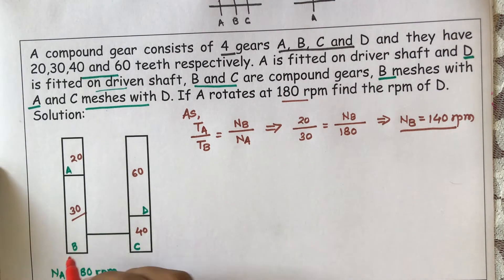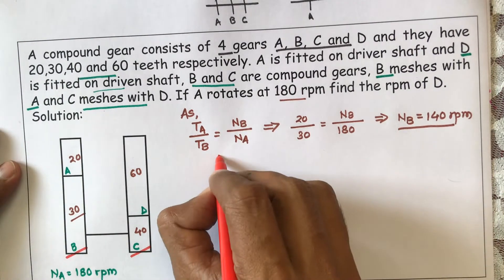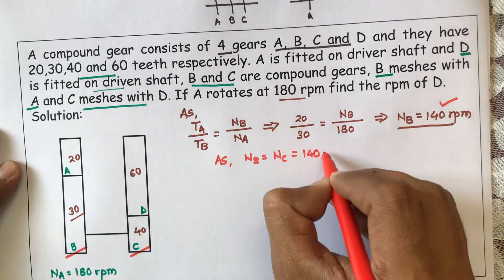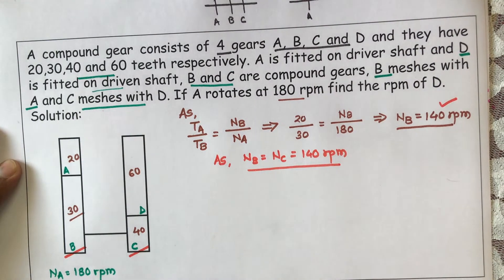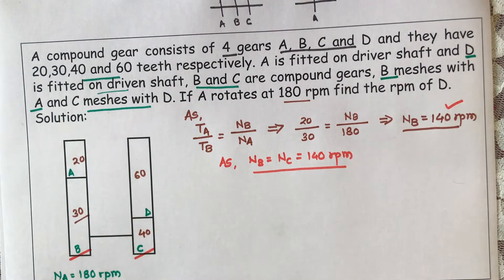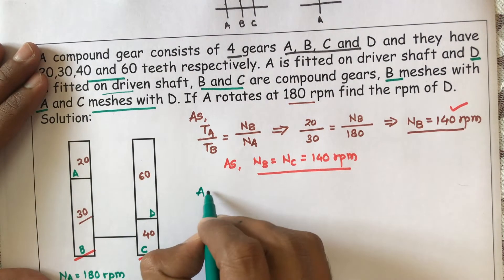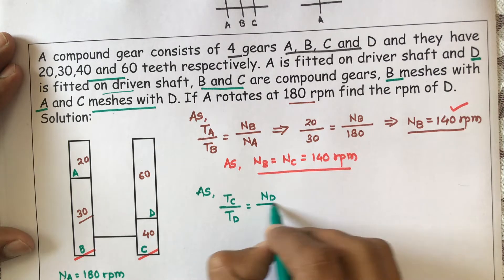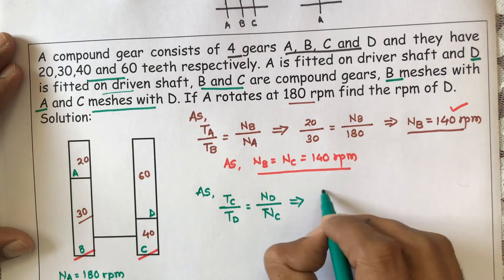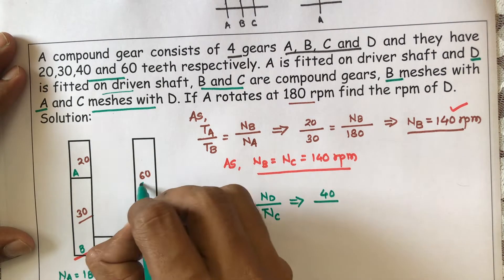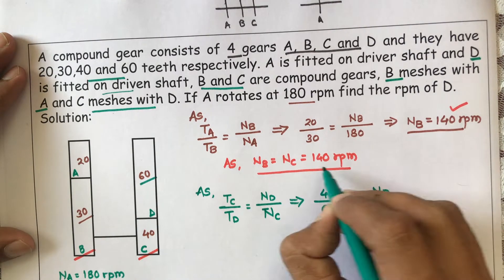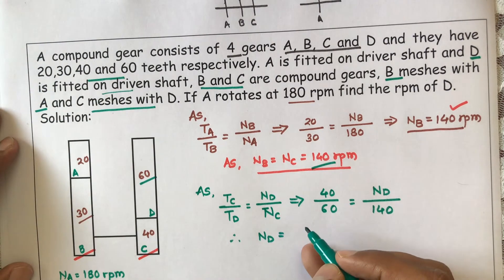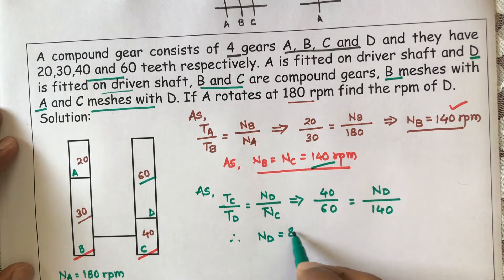Since gears B and C are mounted on the same shaft, NB = NC = 120 RPM. C also rotates at the same speed. Now, since C is meshed with gear D, we use the relation TC / TD = ND / NC. Putting in values: 40 / 60 = ND / 120. Therefore, ND = 80 RPM.